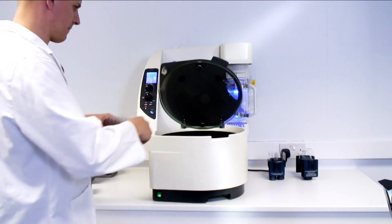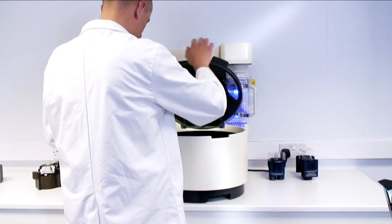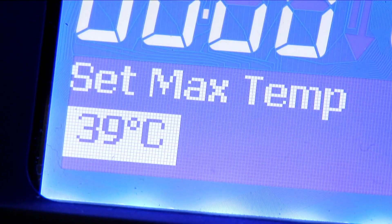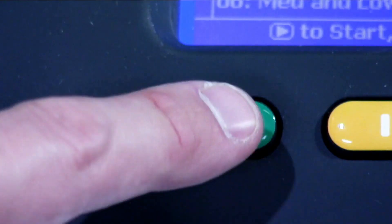Using the EZ2 is simple. Place the samples into the appropriate sample holder, load it into the system, close the lid and set the maximum safe temperature for your samples. Select the appropriate method and hit start.